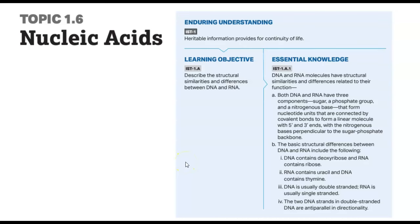Topic 1.6 covers nucleic acids specifically — structural similarities and differences between RNA and DNA. Both have a sugar, phosphate group, and nitrogen base; both are linear with 5' and 3' ends; nitrogen bases are perpendicular to the sugar-phosphate backbone. Differences: DNA contains deoxyribose, RNA contains ribose; RNA contains uracil, DNA contains thymine; DNA is usually double-stranded, RNA usually single-stranded; double-stranded DNA strands are anti-parallel.